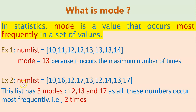Let's look at another example. Here, while 10 and 16 appear only once, 12 appears twice, 17 appears twice, and 13 appears twice. This means that the numbers 12, 13, and 17 appear the maximum number of times — this list has 3 modes, namely 12, 13, and 17.